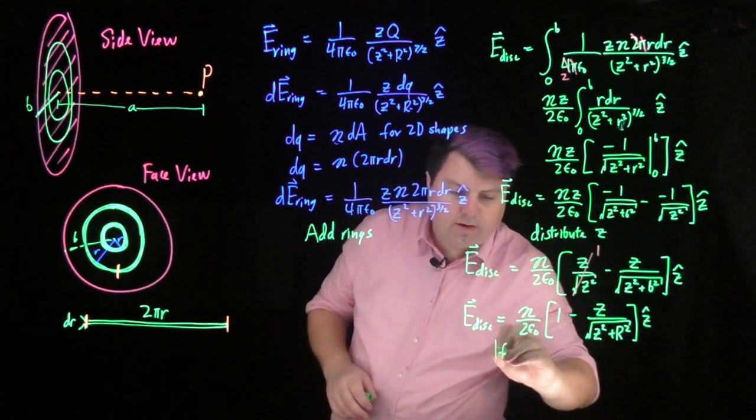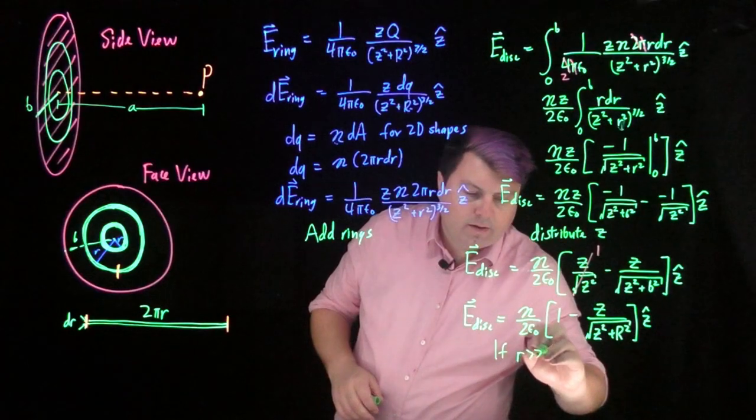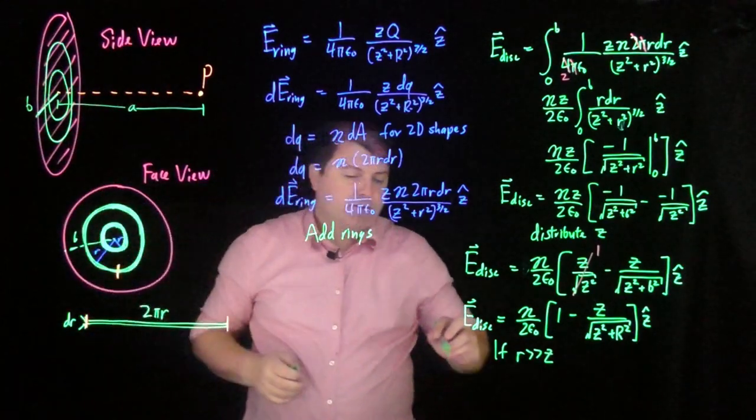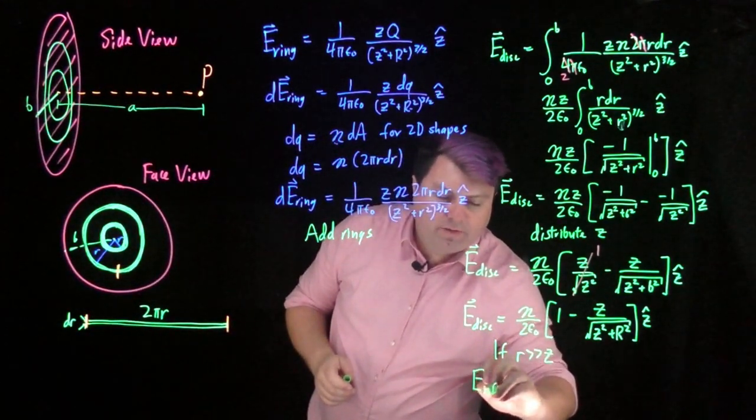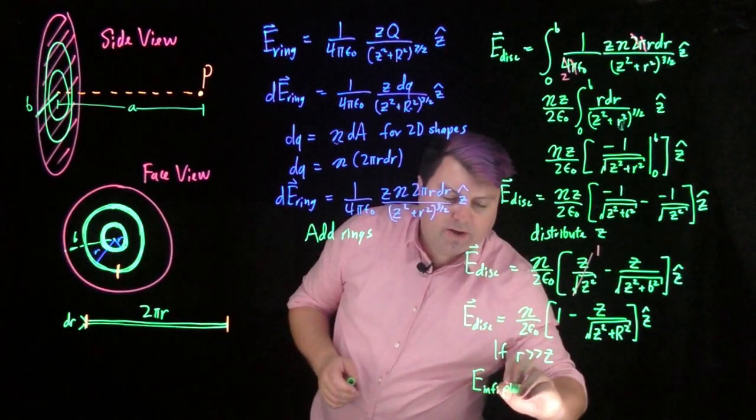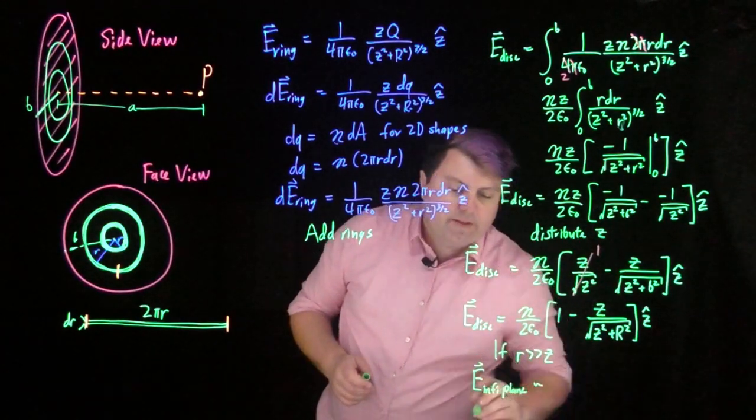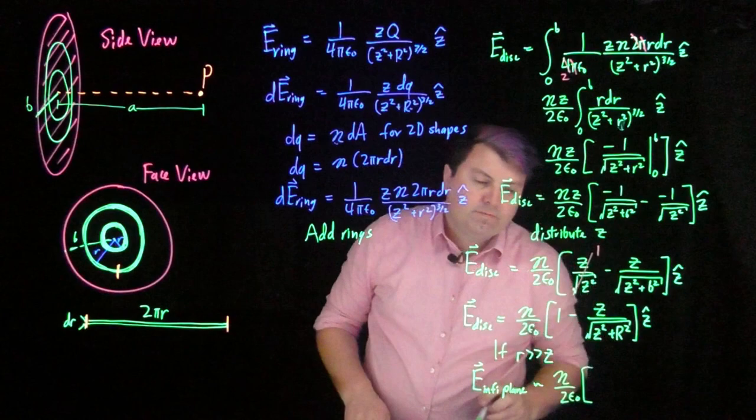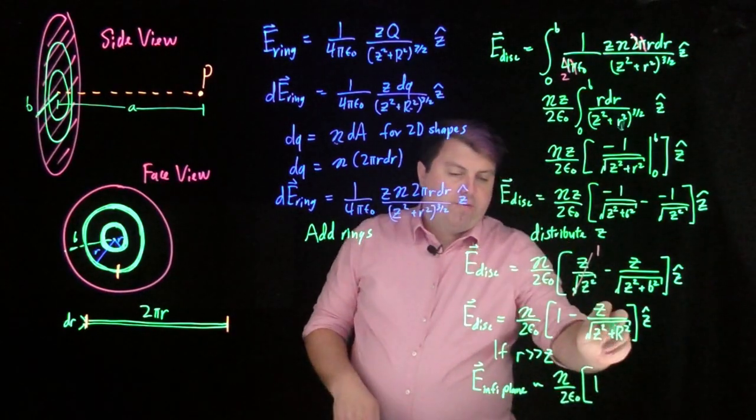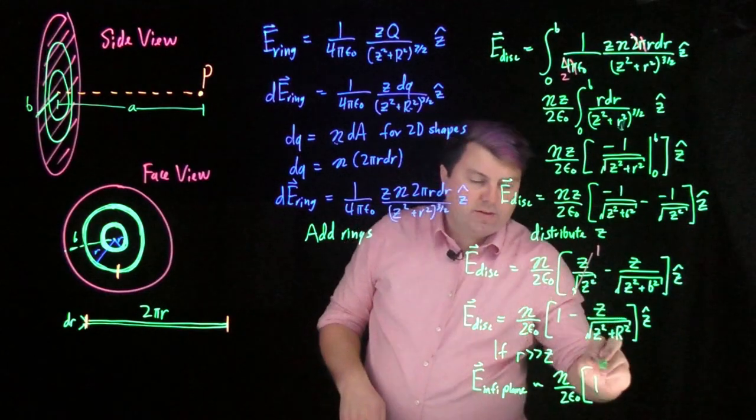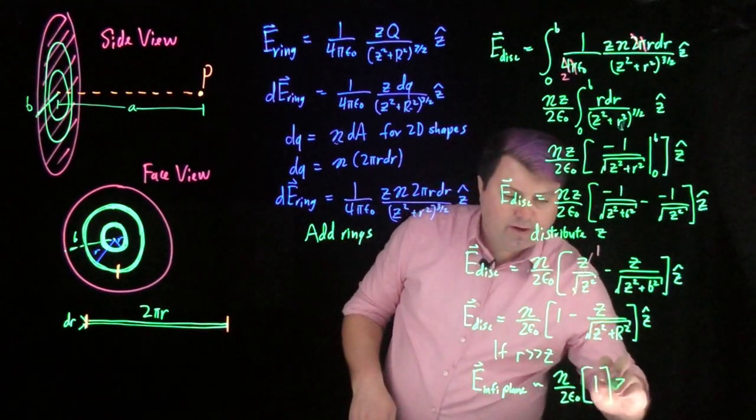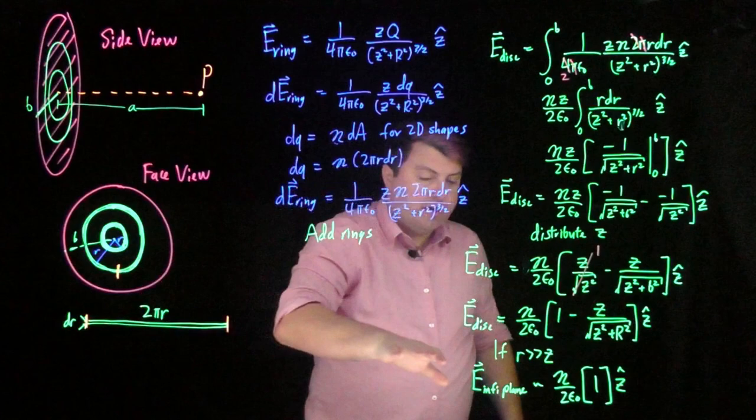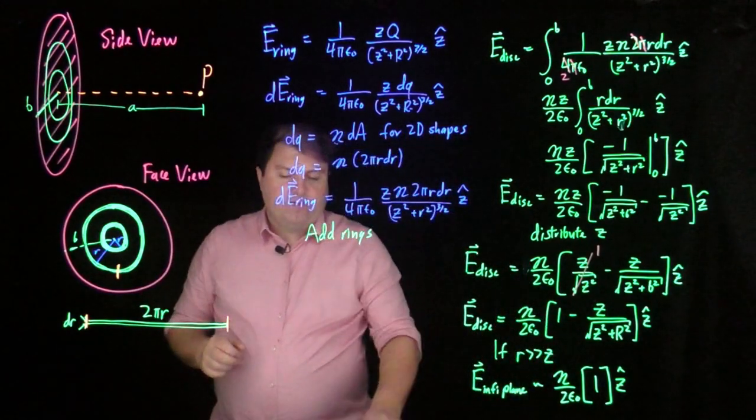So if r is much, much larger than z, if we are very, very close to the disk, or if the disk is very, very large, we can call this the electric field of an infinite disk. Any infinite disk can also be thought of as an infinite plane. Then this electric field of this infinite plane is going to be eta over 2 epsilon naught. The 1 stays, but if r is much, much larger than z, this entire term goes to 0, so we just get this 1 z hat. So if our disk is very, very large, or if we are very, very close to the disk, then we get a constant electric field.